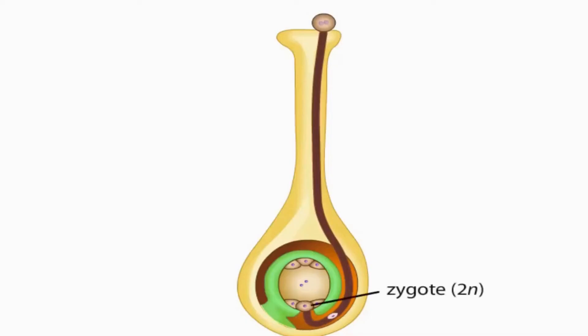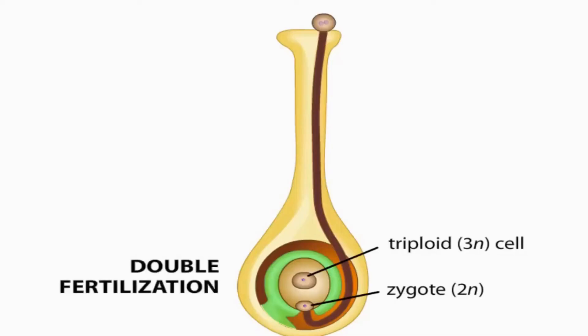One sperm fuses with the egg cell and forms the zygote. Another sperm fuses with the definitive nucleus and forms the endospermic nucleus. In this way, double fertilization occurs.